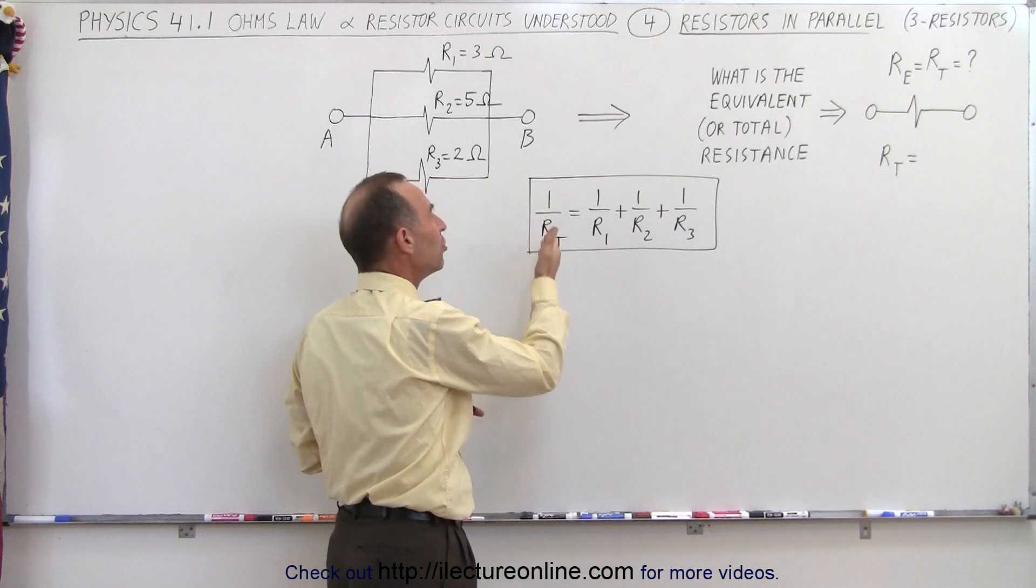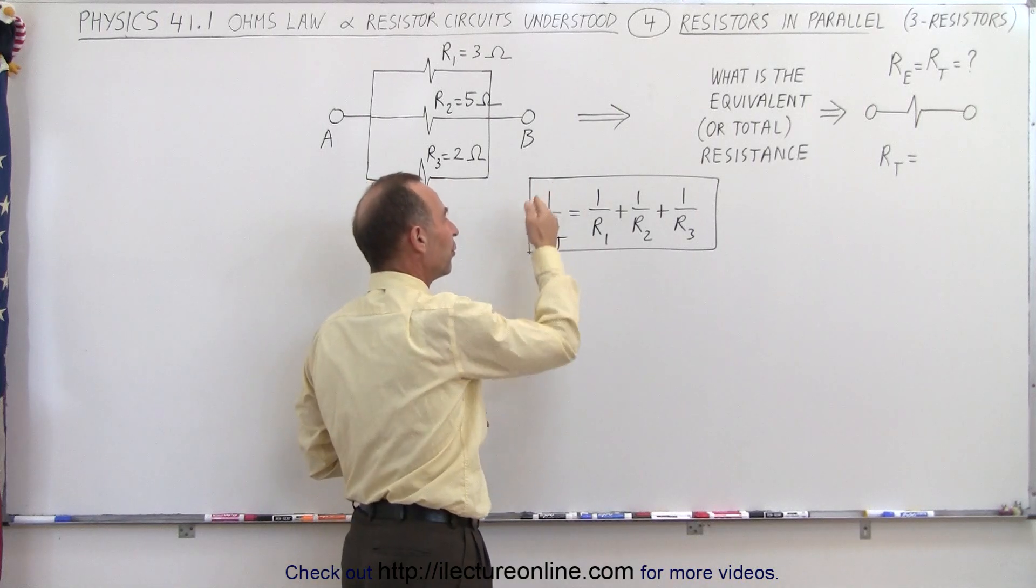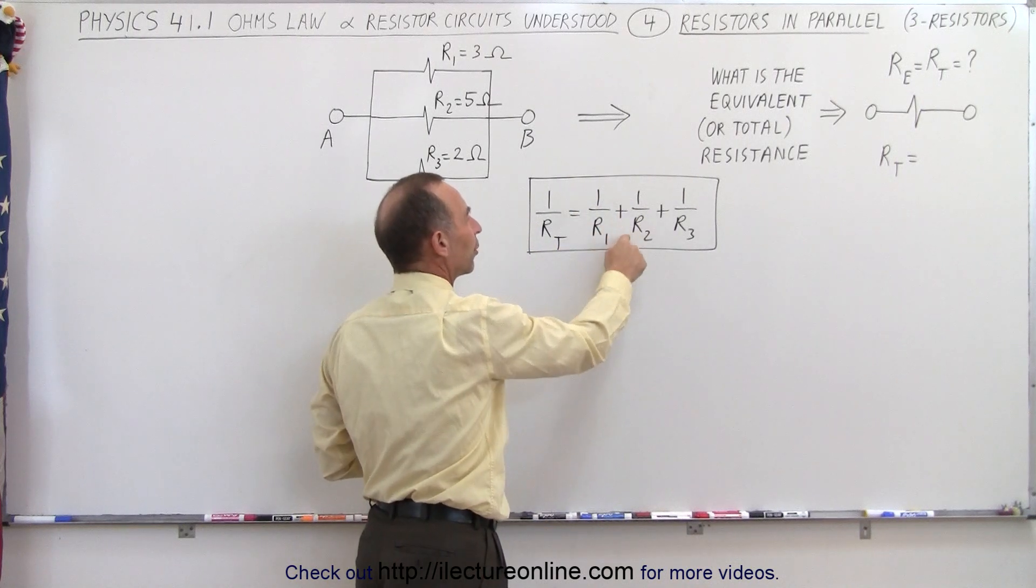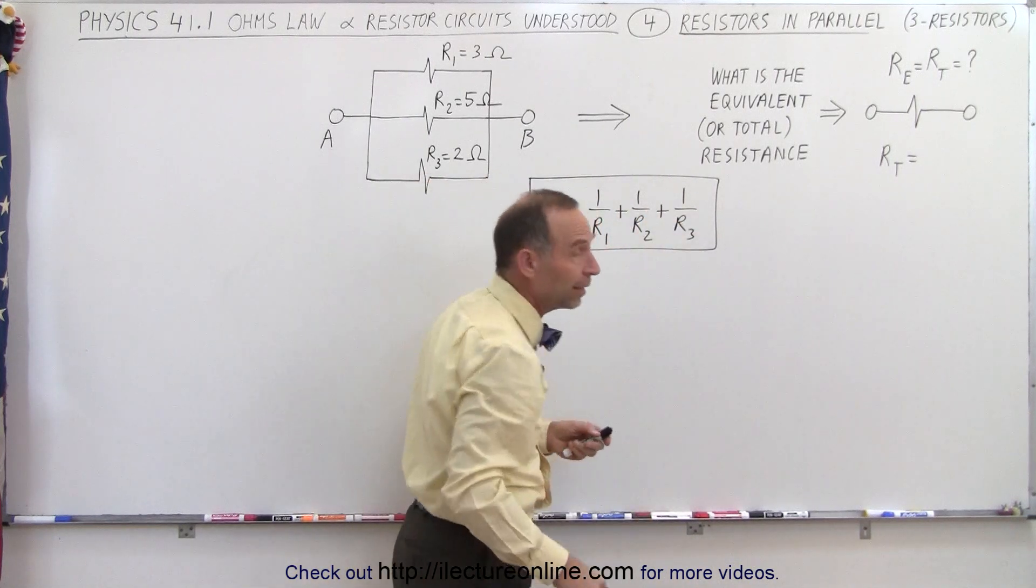To find that out, we need to use the one-over rule. One over the total resistance is equal to one over R1 plus one over R2 plus one over R3.